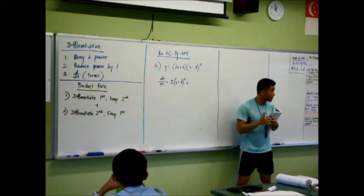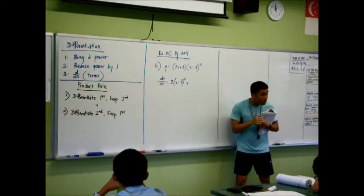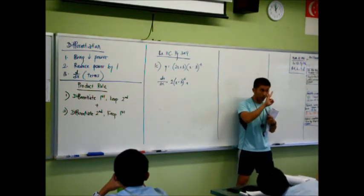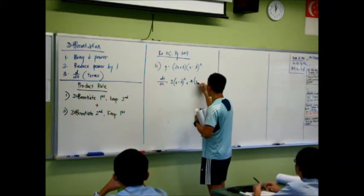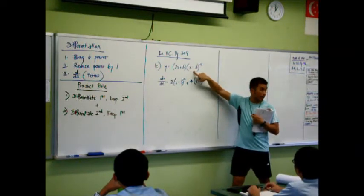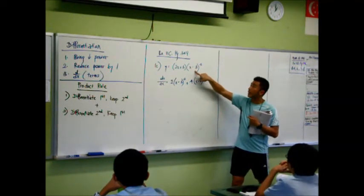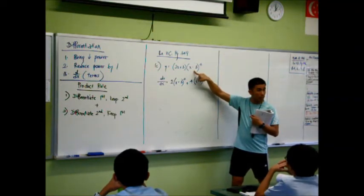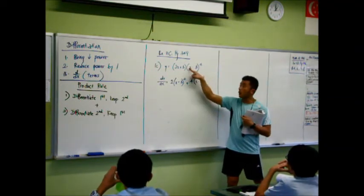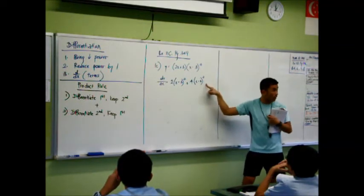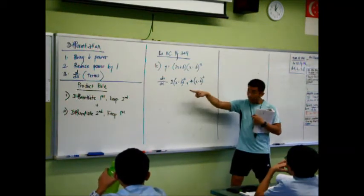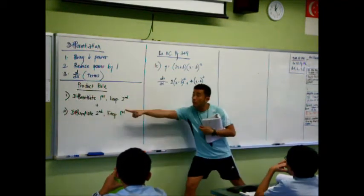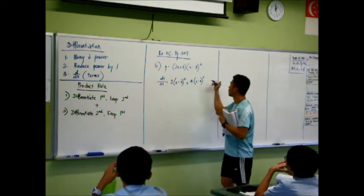You realize that the second term is a composite function. So when it's a composite function, how many steps are there? 3. That's always step by step. Bring down the power. Reduce the power by 1. Differentiate the term inside this bracket. Am I right? When I differentiate the term inside this bracket, x minus 3, what do I get? 1. You see there's a 1 over here. This is a 0, so it's just 1. Do I need to write down the 1? No need. Am I done with differentiating the second term? So is this the answer? No. Differentiate the second, keep the first. So I keep the first term.